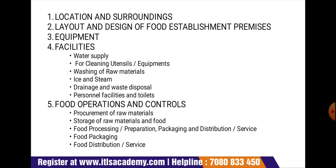Food operation and controls include the procurement of raw materials. No raw material or ingredient shall be accepted by the establishment if it is known to contain parasites, undesirable microorganisms, pesticides, veterinary drugs, toxic substances, or various other things. Raw materials, food additives, and ingredients shall conform to the regulations laid down under the act. Records of raw materials, food additives, and ingredients as well as their source of procurement shall be maintained in a register for inspection.